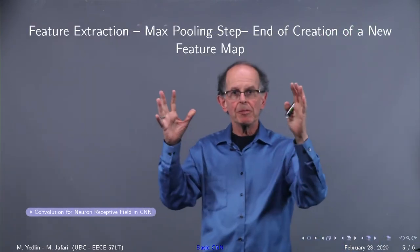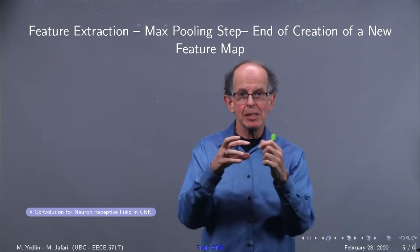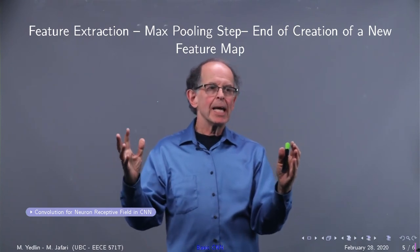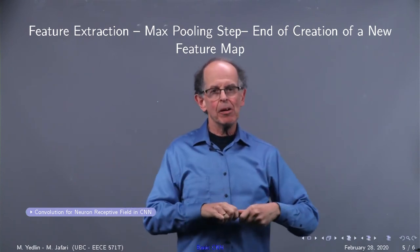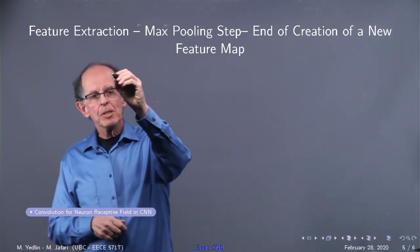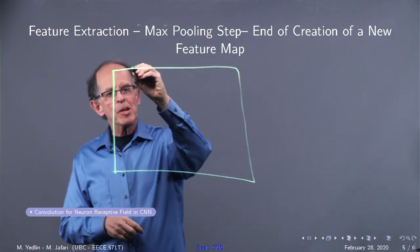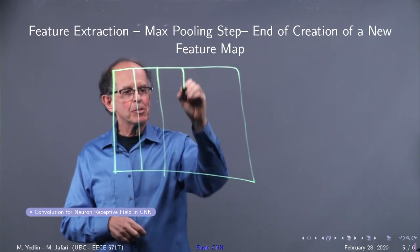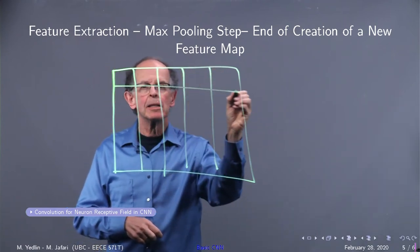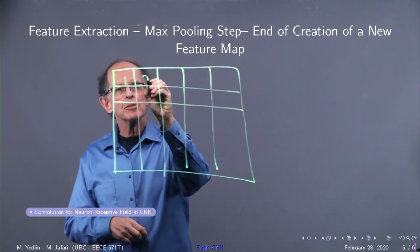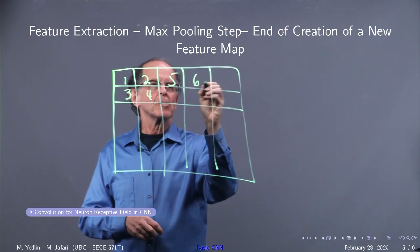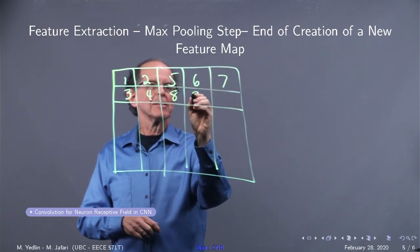So we've got a new feature map obtained by the shift, multiply, add algorithm with our, in general, three-dimensional mask that is a receptive field. We ReLU that entire result, and now we sub-sample it, and that's called max pooling. So when we do this, this is how the operation works. It's fairly straightforward. This is our output of ReLU for some array. One, two, I'll make it easy, three, four, five, six, seven, eight, nine, ten.